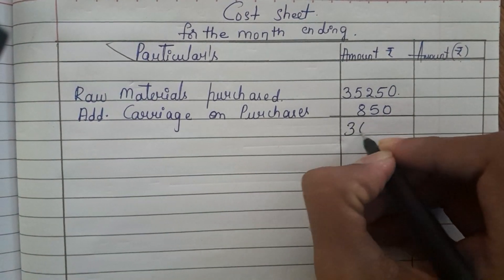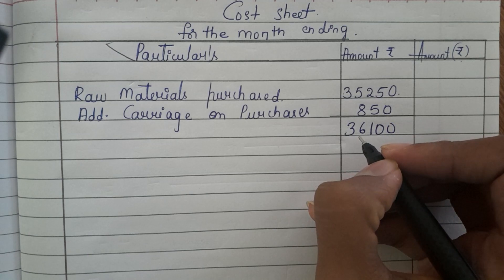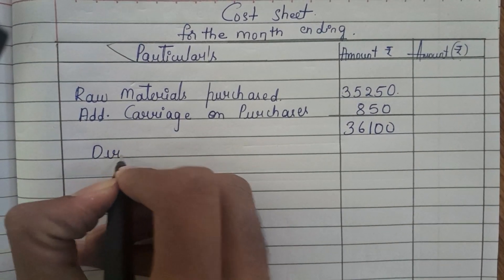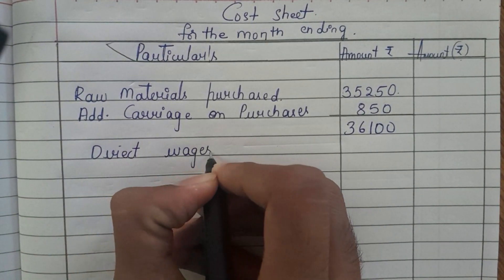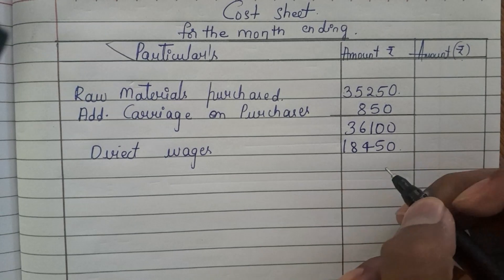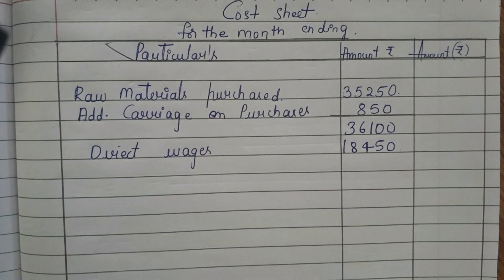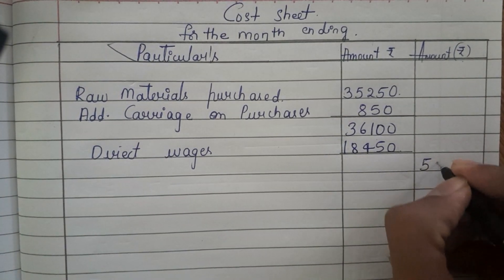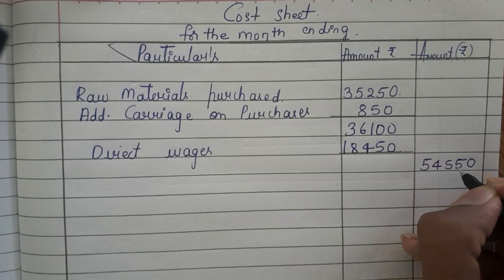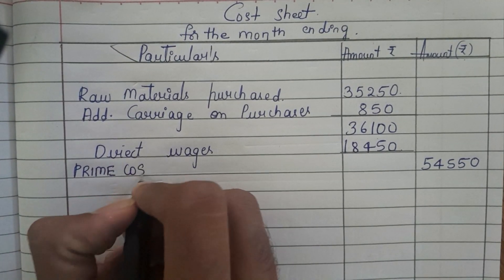Adding 35,250 plus 850, we get 36,100. Now we need to add direct wages. Direct wages is 18,450. Adding 36,100 and 18,450, we get 54,550. This amount is known as prime cost.